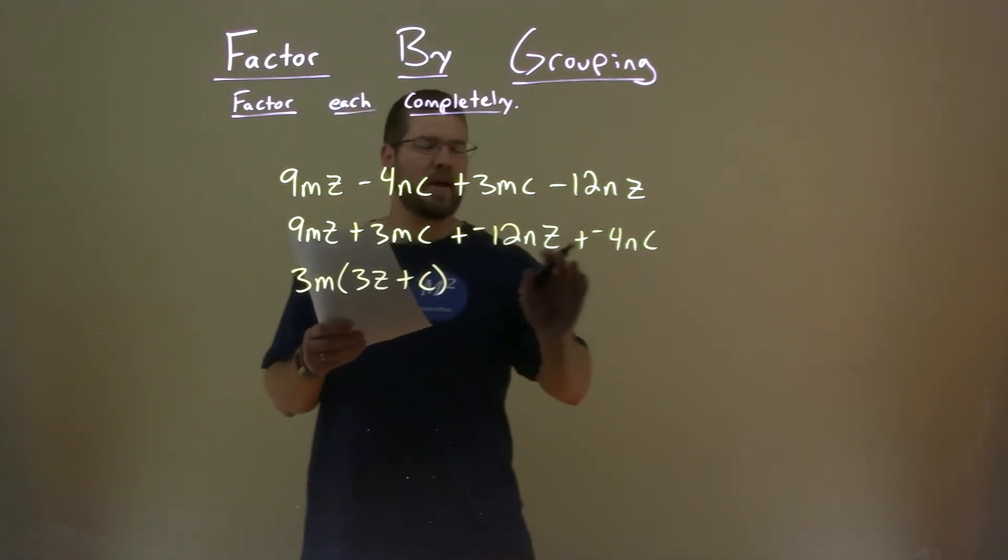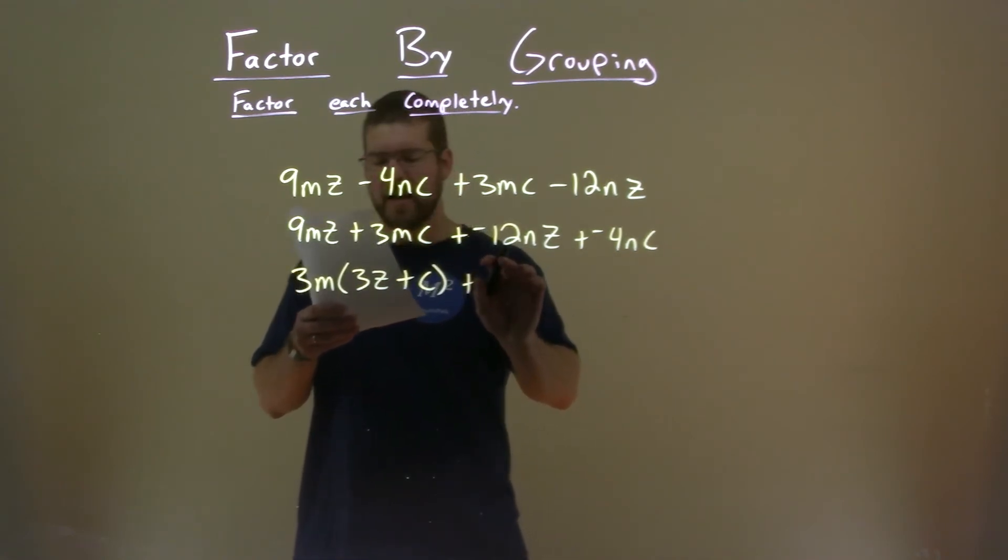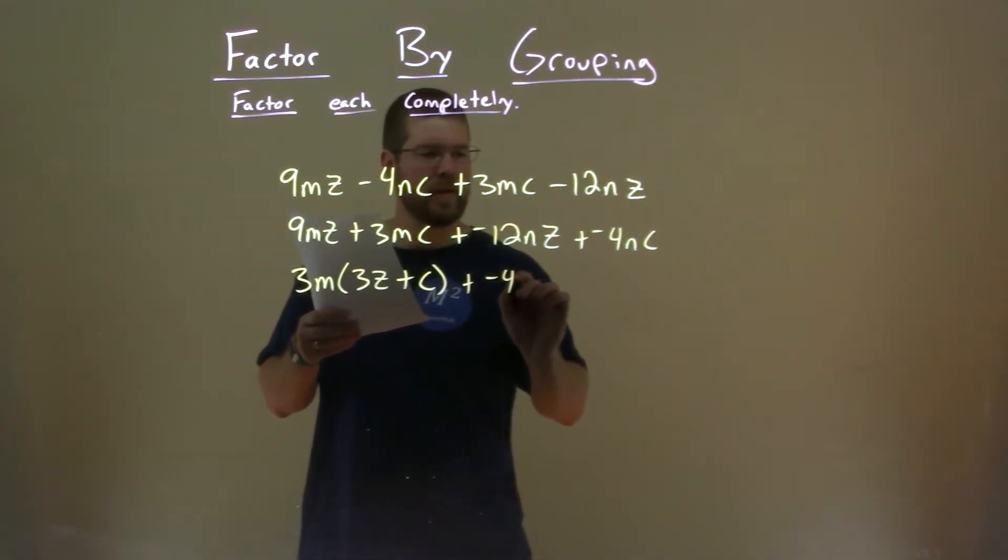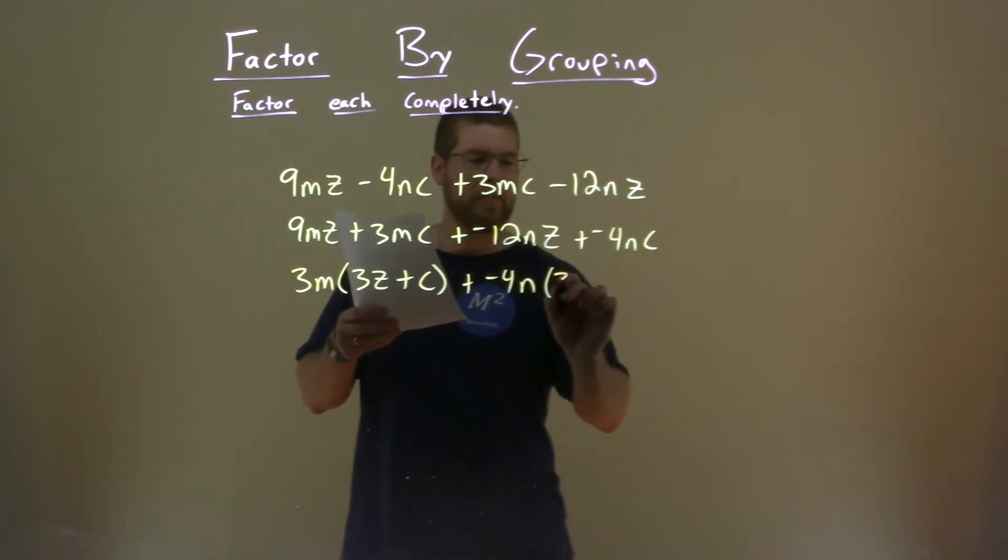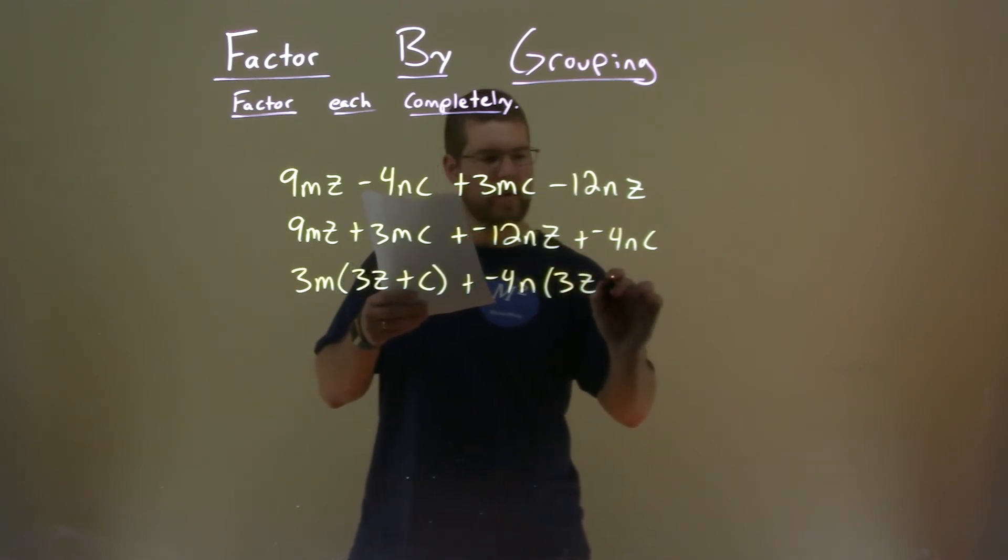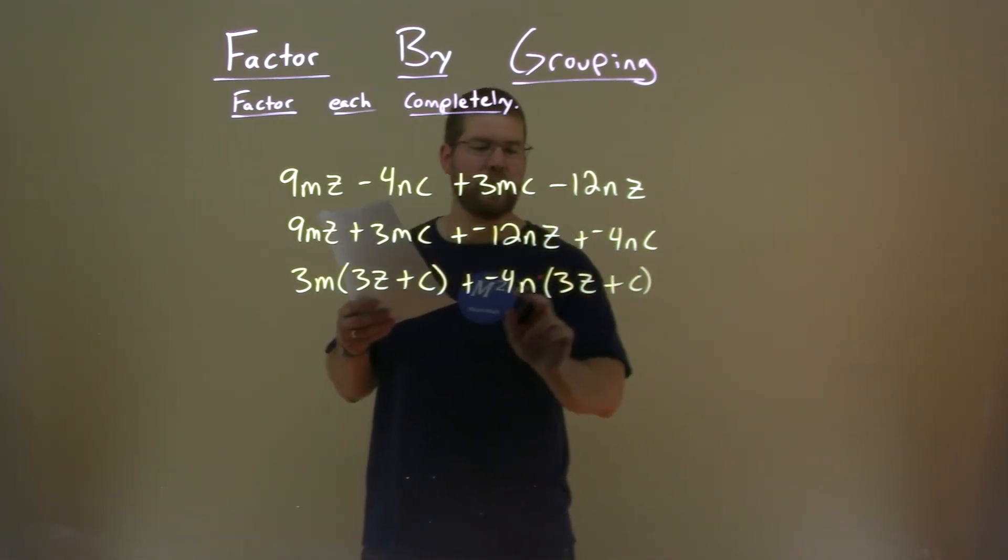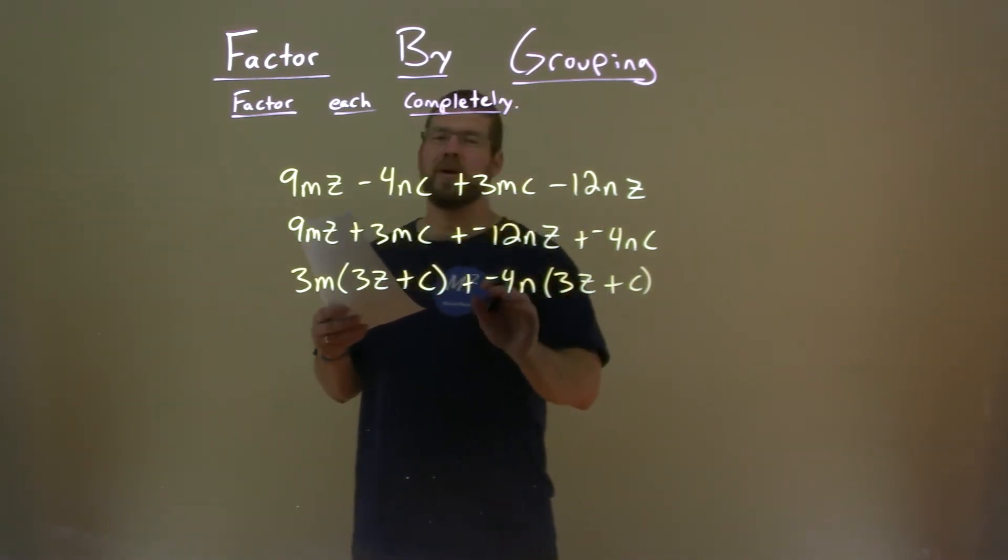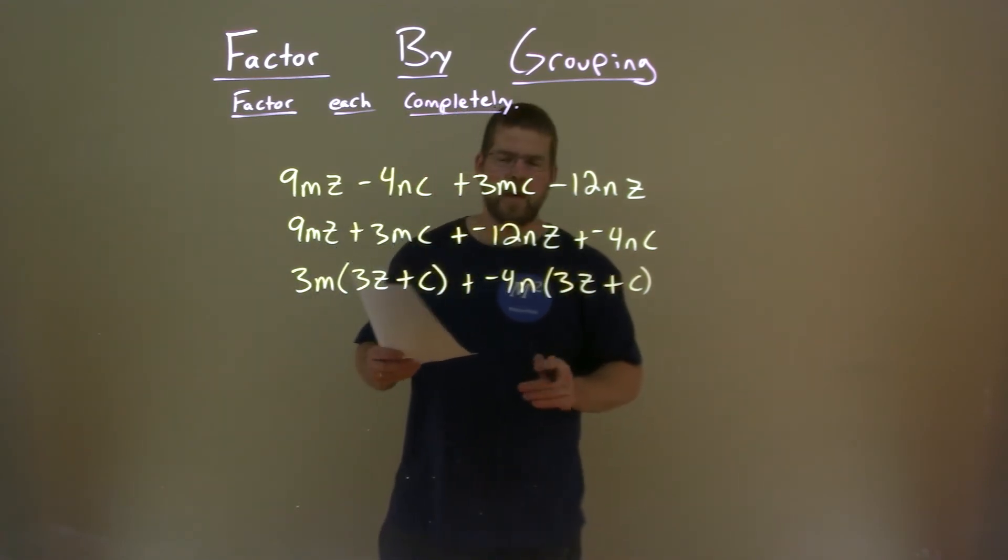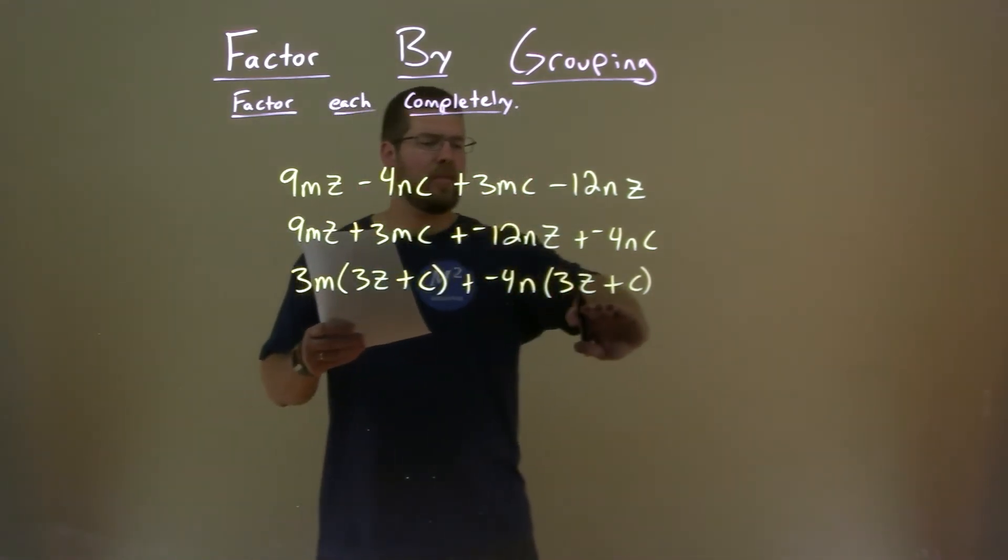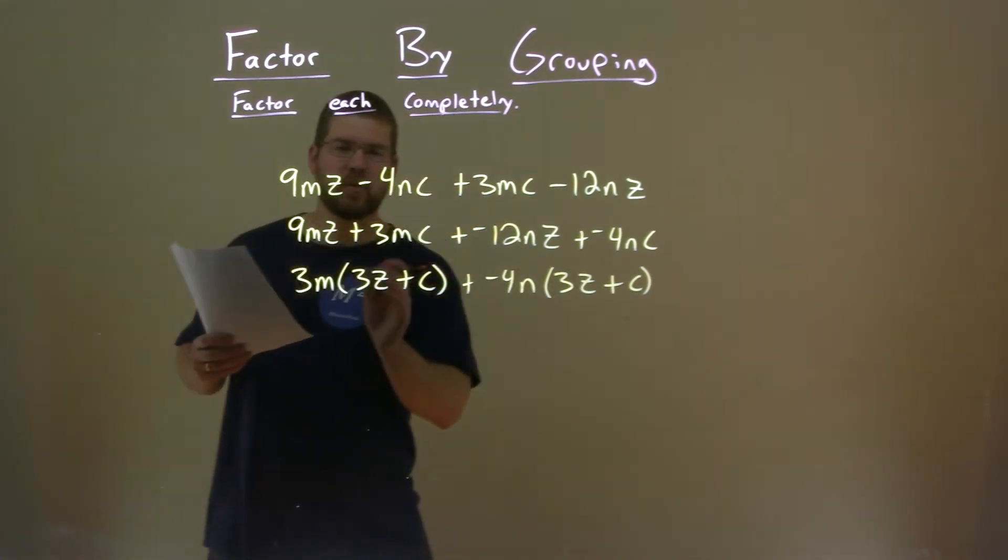I'm going to do that again with the second two numbers. A negative 4 is in both parts, as well as an N. If I pull out a negative 4N in both of these, I'm left with a 3Z plus C. And make sure you keep the negatives and positives in line. We're pulling out a negative 4N. Well, I have a 3Z plus C and 3Z plus C written twice right here.